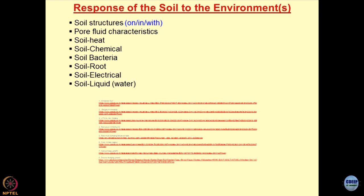If you look at the physics behind this, roots produce suction, and when suction is created, this becomes a soil-suction interaction. A 3-phase system means the pores are filled with air and water, and this dynamics of air and water guides the properties of the soil. Similarly, soil-bacteria interaction does the same thing — bacteria might produce gases due to decomposition of organic matter, and once these gases remain in the soil, the whole system becomes very susceptible to temperature and pressure.